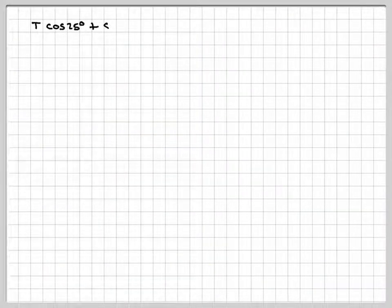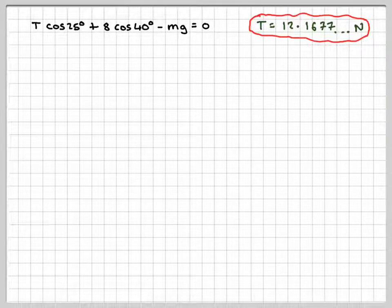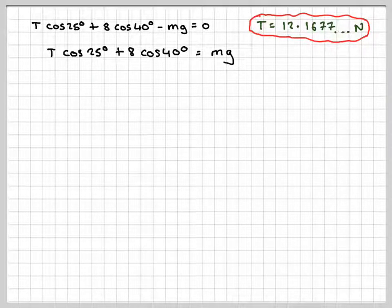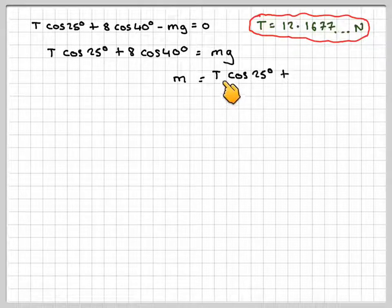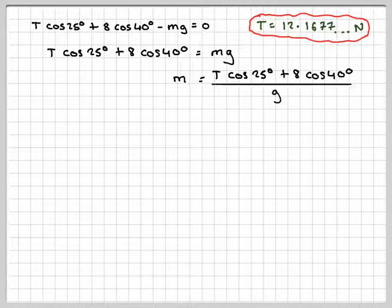We know that T is 12.1677 newtons from the previous part. But rearranging, we've got T cos 25 plus 8 cos 40 equals mg. And therefore m will be T cos 25 plus 8 cos 40 divided by g.